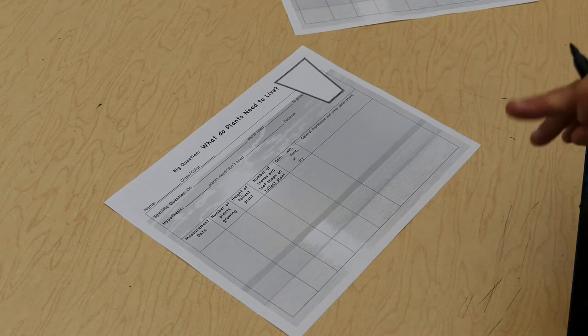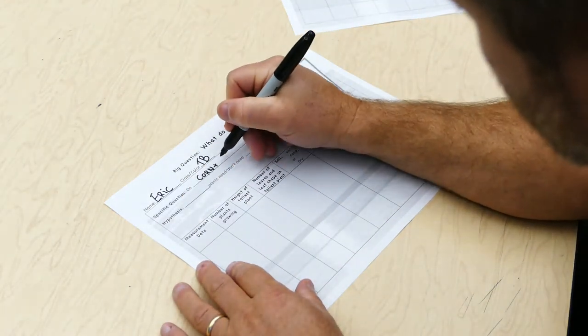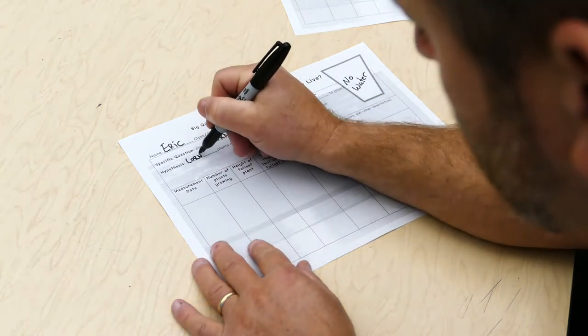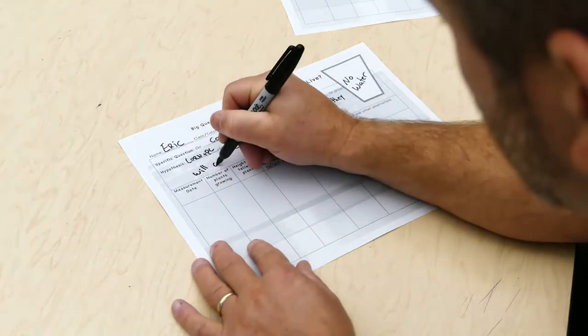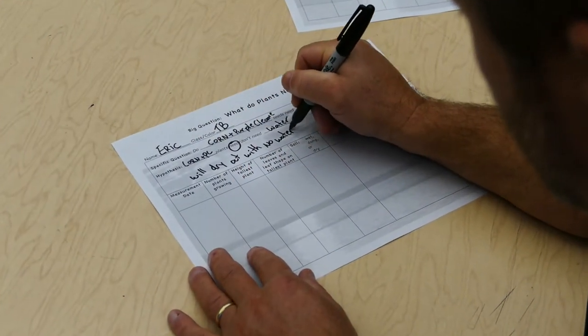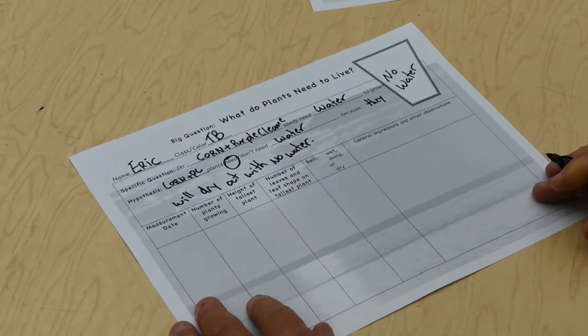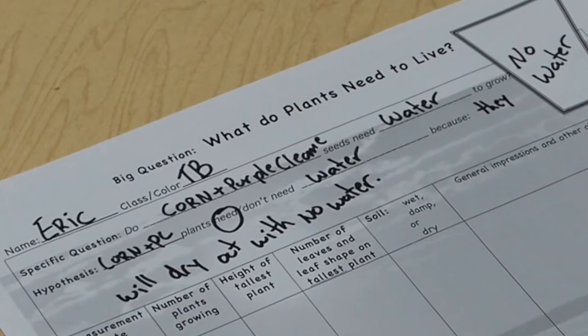Make sure you find all the data sheets for this experiment. You might have more than one. And make sure they're completely filled out at the top. And make sure you have the right data sheet for the pot you're observing.